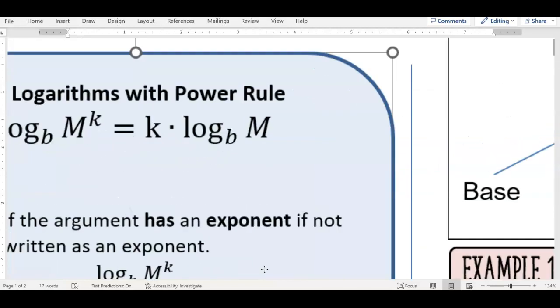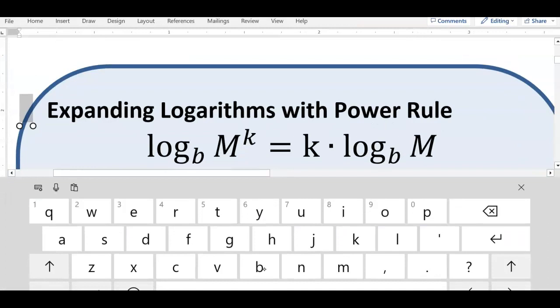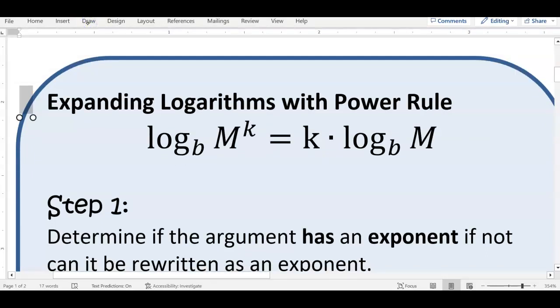If inside your parentheses, if inside the parentheses has an exponent, all you're going to do is take that exponent and move it to the front. If there's an exponent inside, it goes to the front. Do you see how that works? Instead of M to the k inside the parentheses, now it's just M in the parentheses, and the k is now in front. That's all we're doing today.